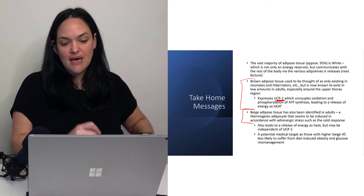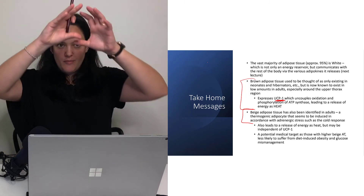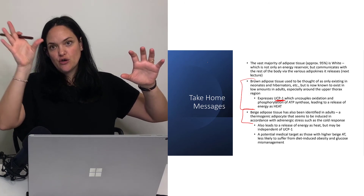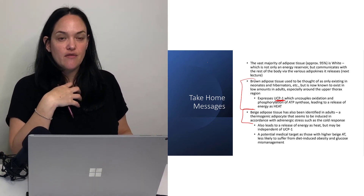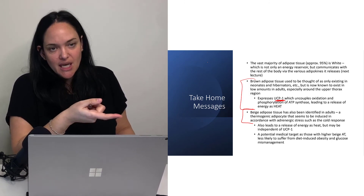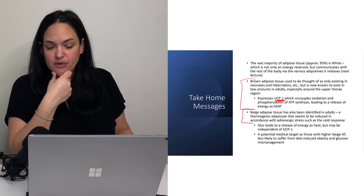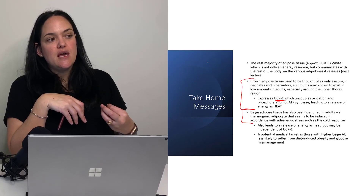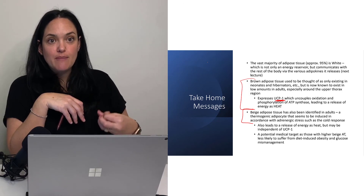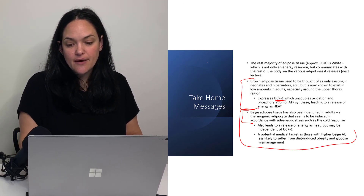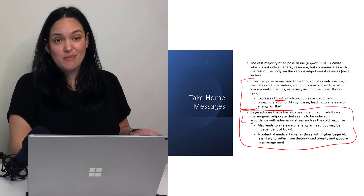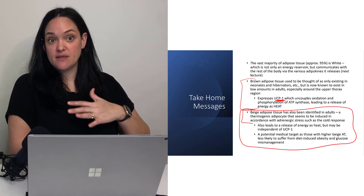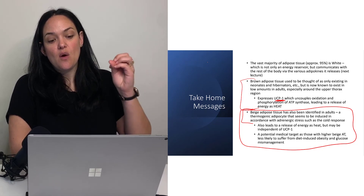Beige adipose tissue develops from white adipose tissue, while brown and white develop from different lineages. Beige adipose tissue develops from the white lineage and basically occurs when white adipose tissue undergoes some sort of adrenergic stress — cold exposure, burning, bariatric surgery can promote this as well. This leads to the browning of the white adipose tissue where we see higher expression of UCP1 and a more metabolically active tissue with the ability to generate more heat. This is potentially a future therapeutic area for increasing metabolic capacity of the body and perhaps reducing adiposity, and we also see an increase in insulin sensitivity with more beige activity.